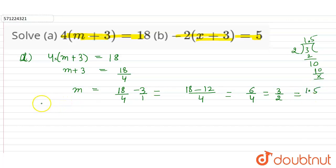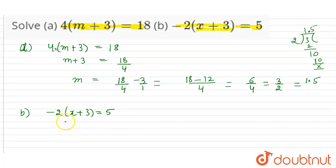Now in the B part we have given minus 2, x plus 3 is equal to 5, is equal to 5. Now let's solve.